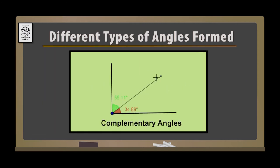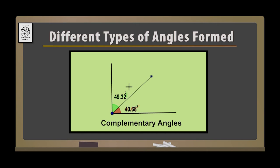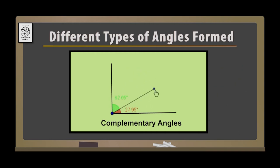Then we have two angles whose sum is 90 degrees. We have one angle here which is 49.32 degrees, and another angle of 40.68 degrees. If you add them up, it adds up to 90 degrees. So even if these angles change, their sum remains 90 degrees. So they form what are known as complementary angles.